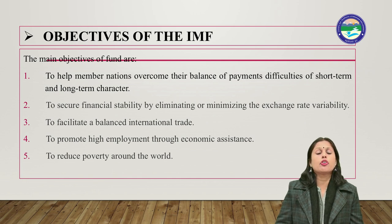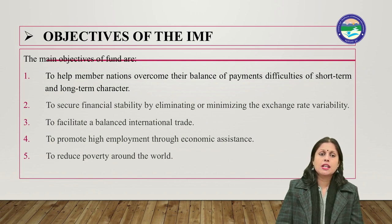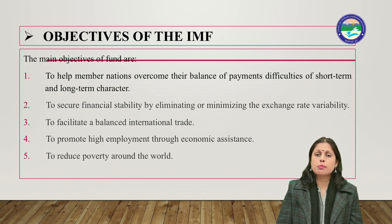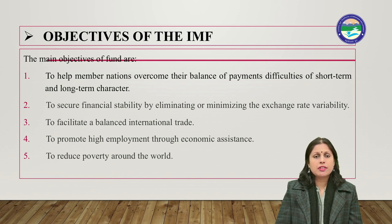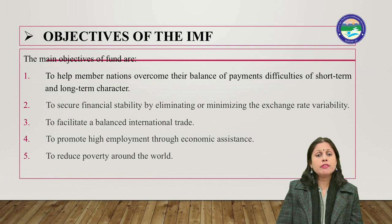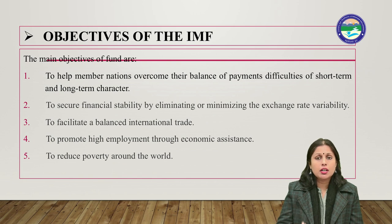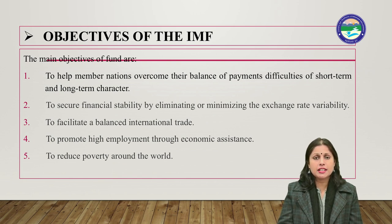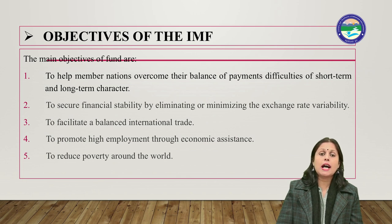The second objective is to secure financial stability by eliminating or minimizing exchange rate variability. Member nations cannot change the value of their currency by more than 10% without permission from the IMF. If they want to increase the value by more than 10%, they must seek permission from the IMF.